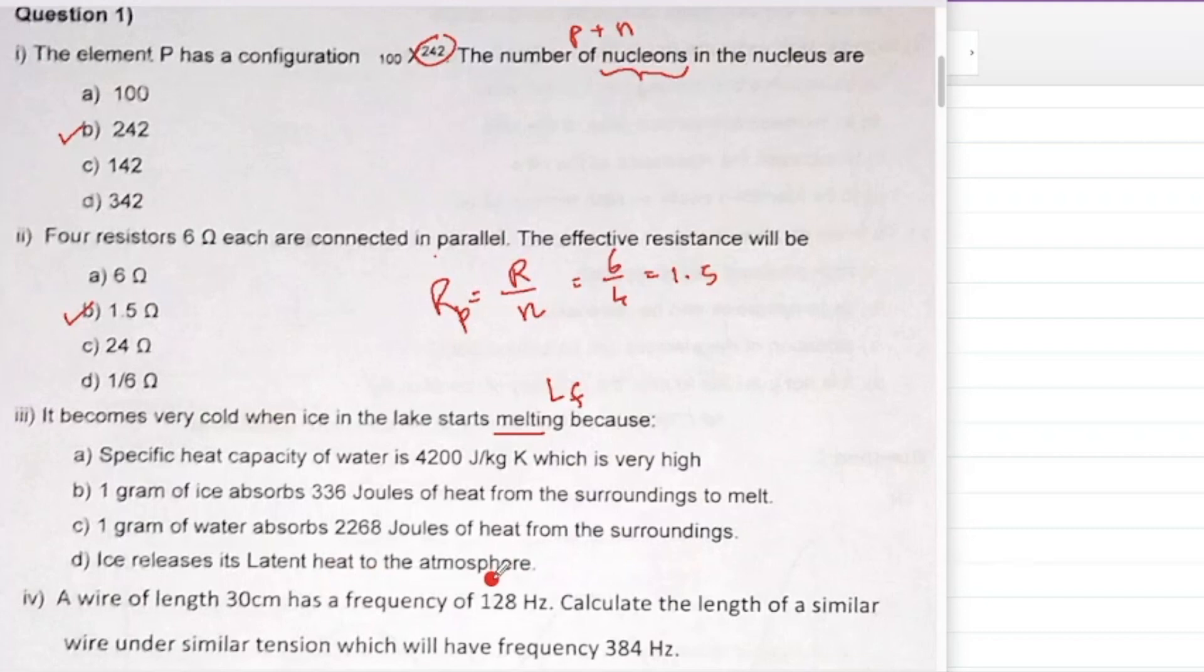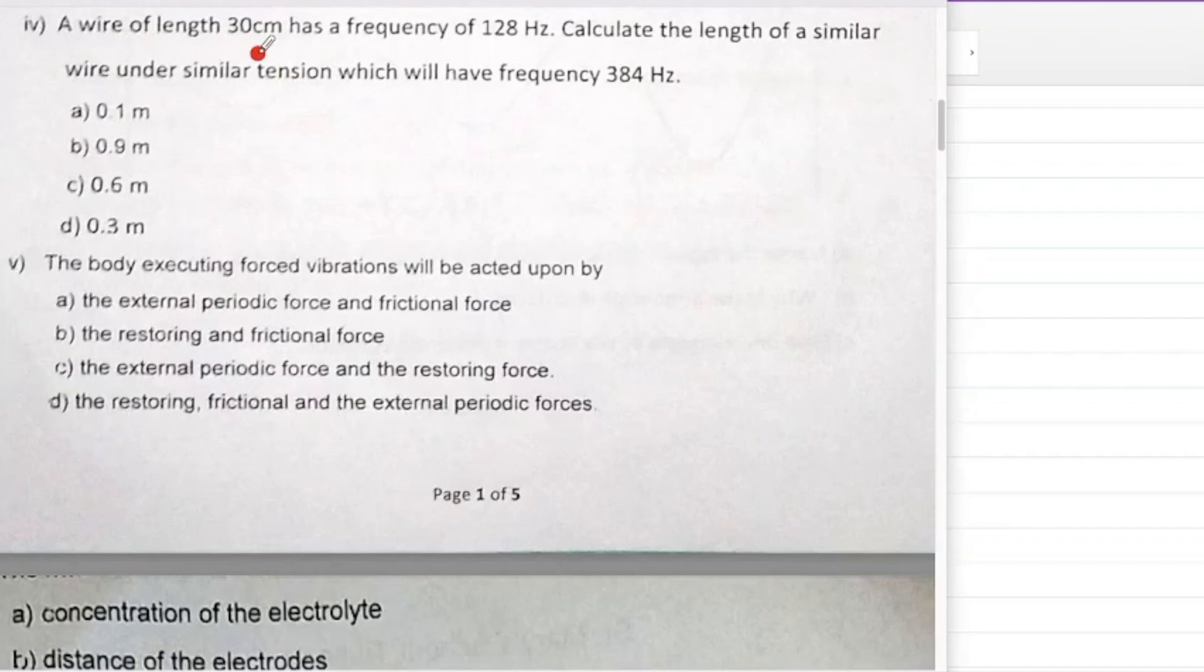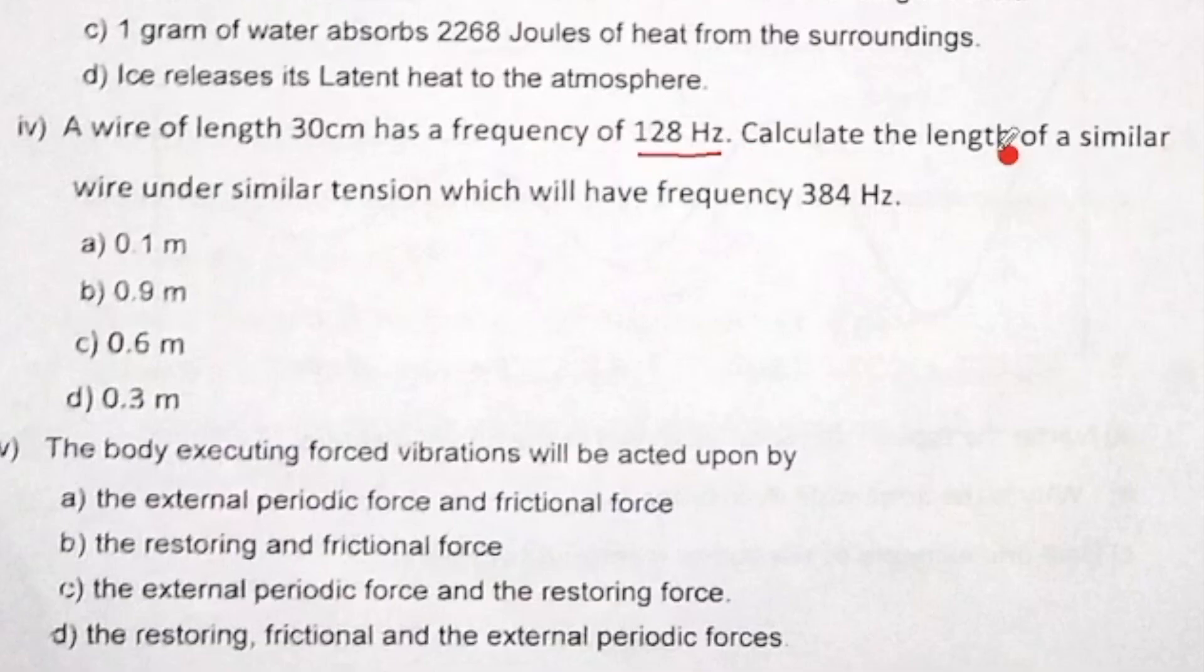What are they saying? Ice releases latent heat to the atmosphere - how does it release? It will absorb from the atmosphere, correct. Let us come to the next part. A wire of length 30 centimeters has frequency 128 hertz. Calculate the length of similar wire under similar tension which will have frequency 384 hertz.